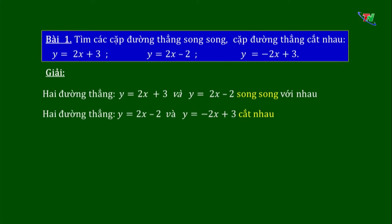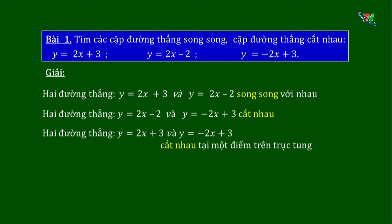Cặp đường thẳng thứ 3: Y bằng 2x cộng 3 và Y bằng âm 2x cộng 3 có A khác A' và B bằng B', nên chúng cắt nhau. Và đặc biệt, chúng cắt nhau tại 1 điểm trên trục tung.